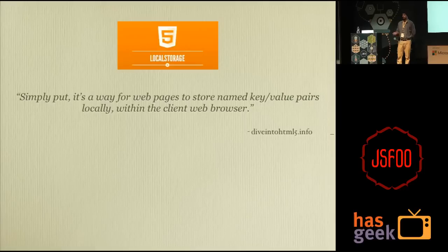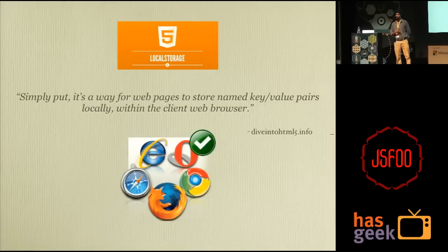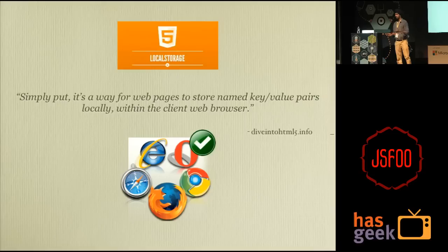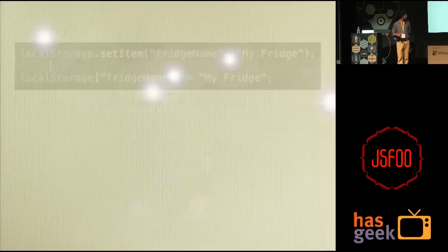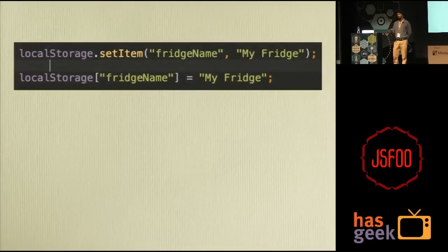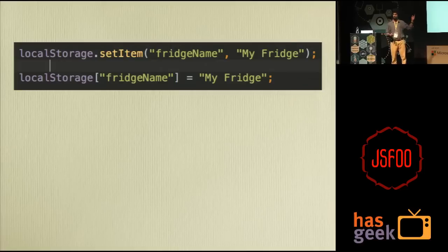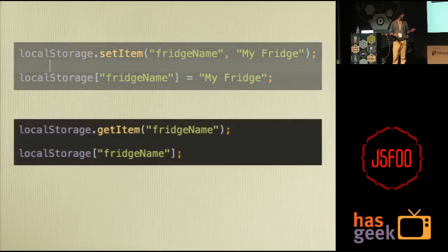The first API we'll be discussing is local storage. It's a simple key-value store. The only catch is that both the key and the value are strings. Local storage quickly gained popularity because it was implemented by almost all major browsers, and it was the first standardized client-side persistence mechanism since traditional browser cookies. The API is pretty straightforward, which is possibly why it has many fans. You are offered simple setters — the browser treats local storage as a map, so you can use map notation to set and get values.